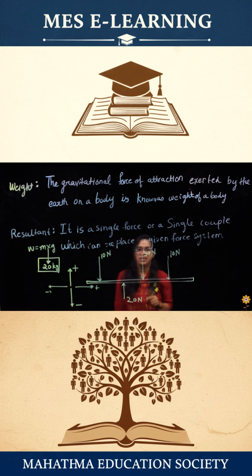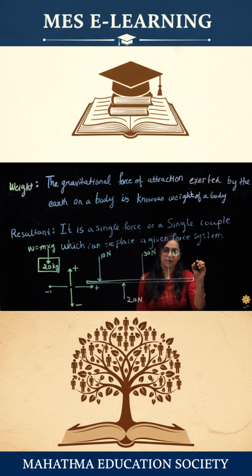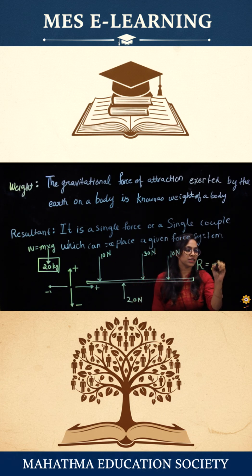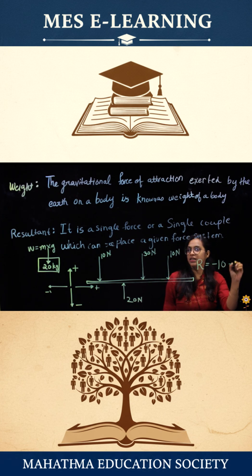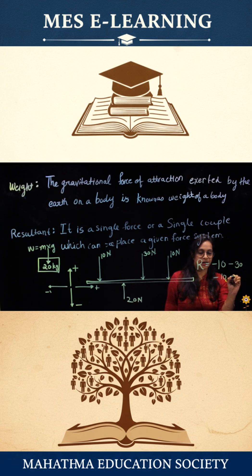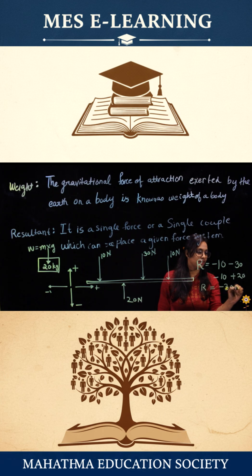Now if we want to find the resultant of this force — that is a single force which would replace the whole system — it would be: R = -10, because it is going downwards and according to the sign convention the downward force is negative, minus 30, minus 10, and plus 20. So if we calculate, it comes out to be R = -30 N.